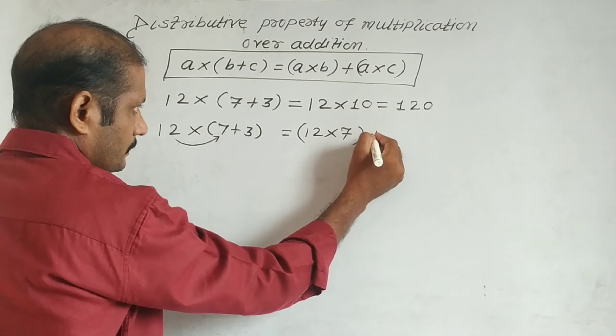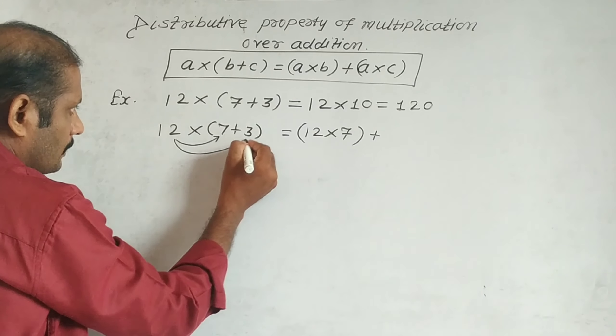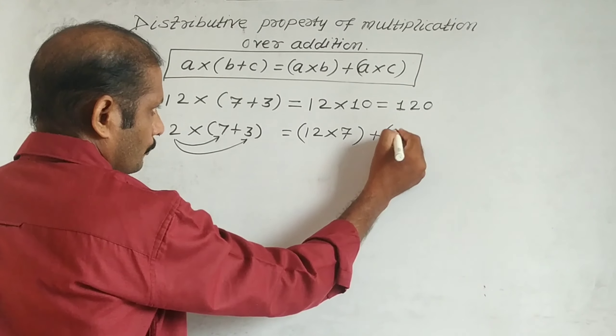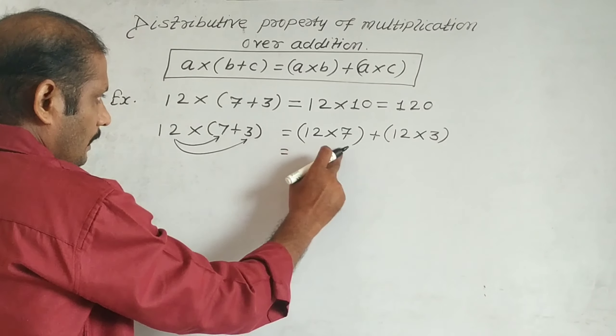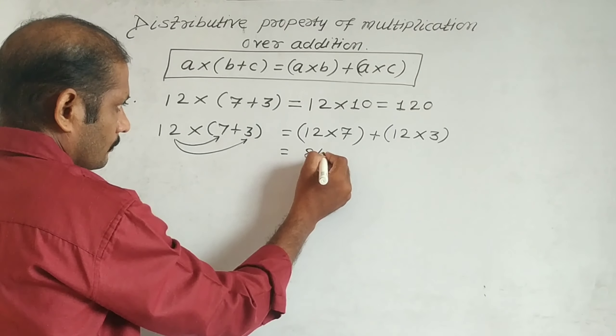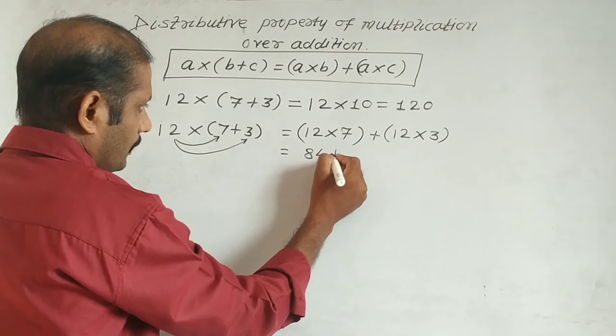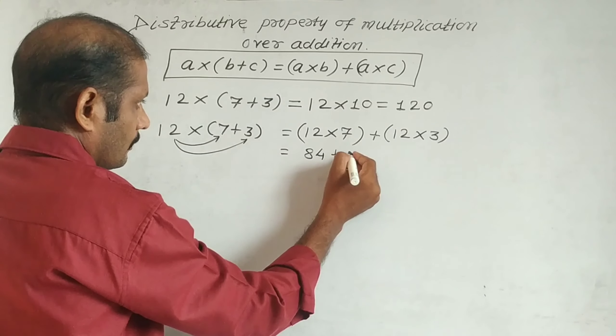The plus sign remains plus. Then we multiply 12 by 3, so we get 12 × 3. That equals... 12 × 7 is 84, plus 12 × 3 is 36.